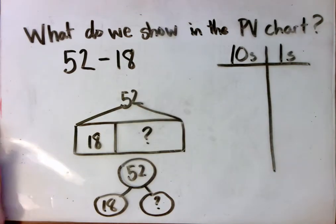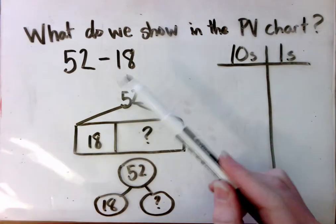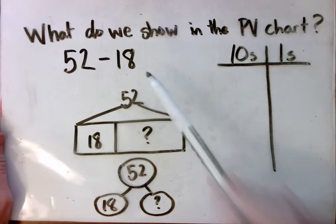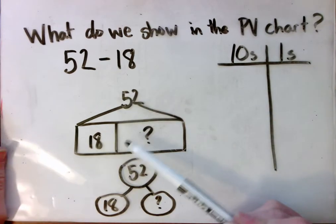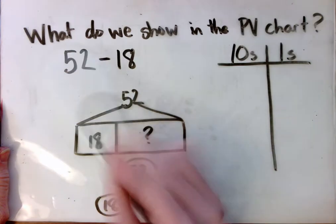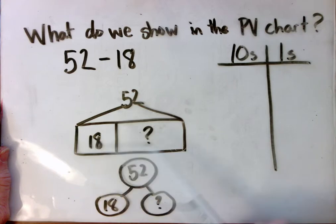And I have to remind them, do we have two parts? We showed both parts in our place value chart for addition. But now think about our tape diagram. 52 is our whole, it's our total. 52 is made of 18 and some other amount.